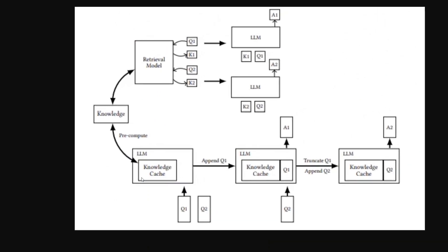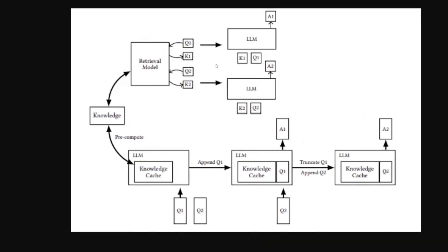This diagram shared by the team shows the difference between RAG and CAG. In the RAG framework, for question one and question two generating answers A1 and A2, you need to calculate K, V, and Q every single time — it's a repeated process. In the CAG framework, there is a knowledge cache — the KV cache — which has pre-computed K and V values. Only the Q value is calculated each time, appended, and then the answer is generated. The step where key and value are recalculated is skipped entirely.